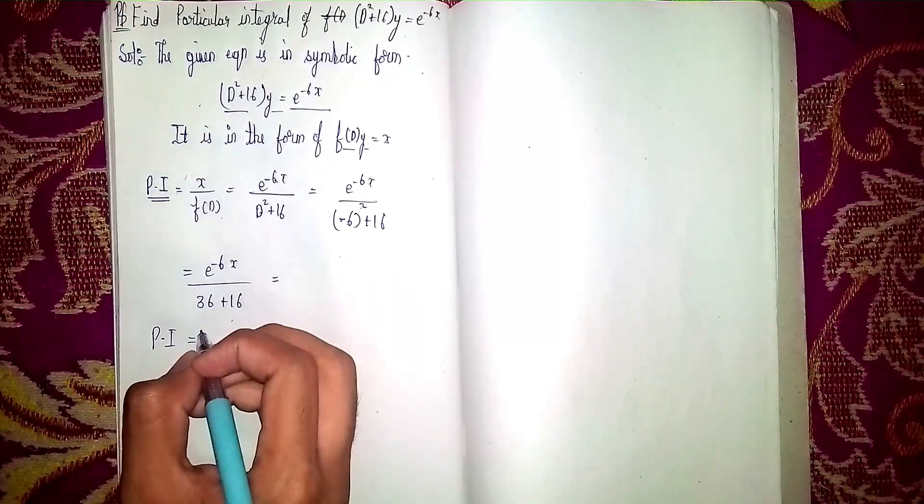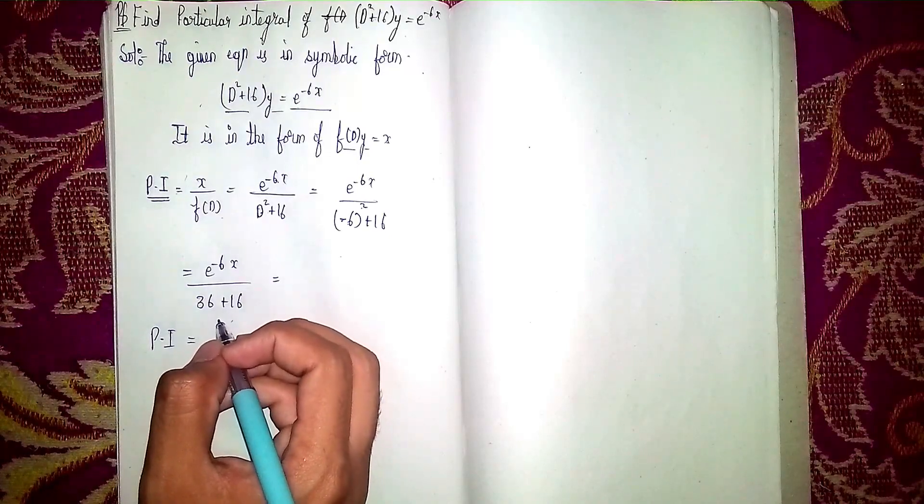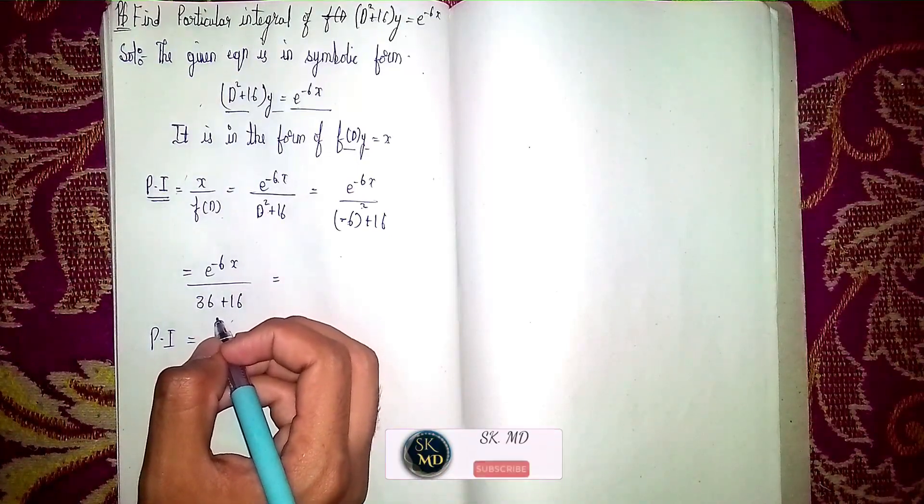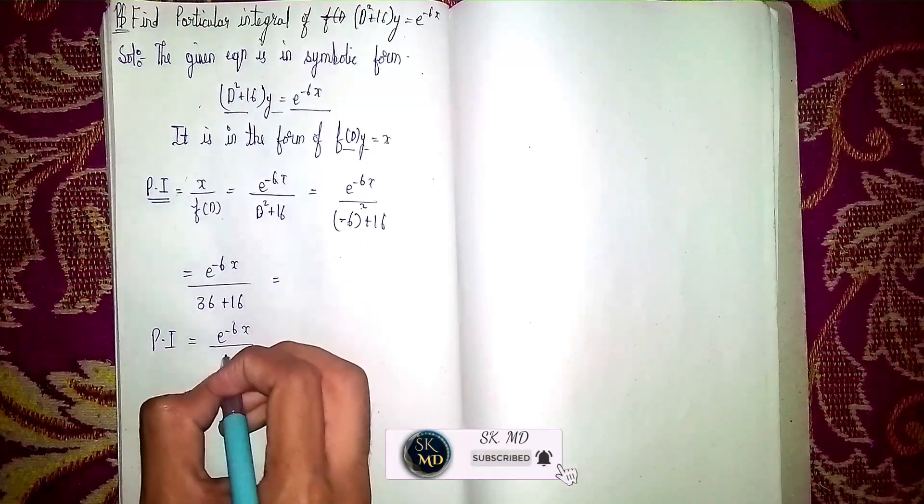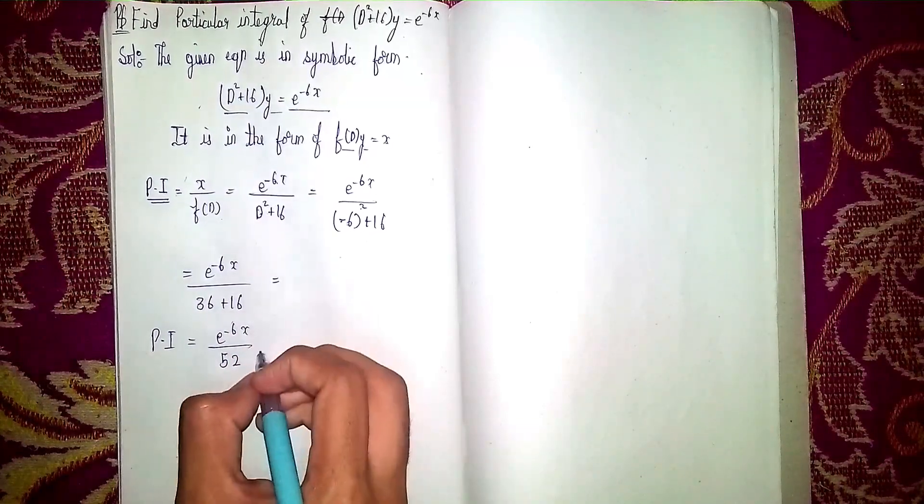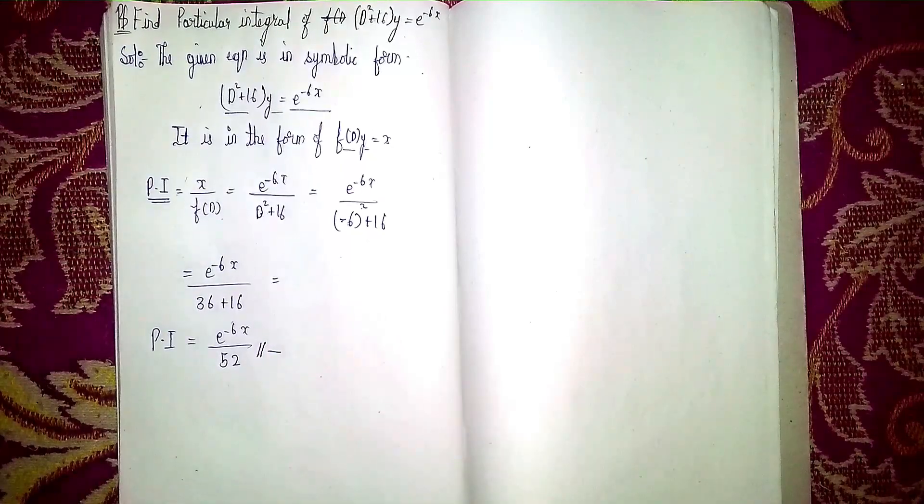Particular integral equals... Now 36 + 16 = 52, so e^(-6x)/52. This is our particular integral. This is our answer. Thanks for watching.